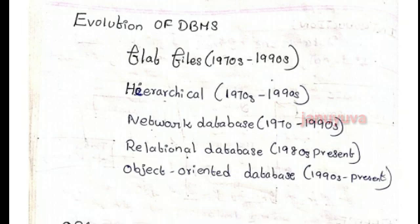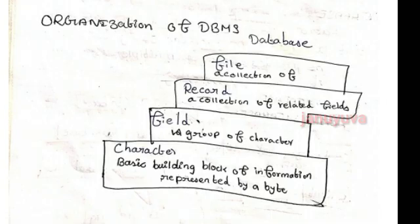The organization of DBMS: first is the file, then record, next field, then character. A file is made of records. A record is field-related. A field is a group of characters. The character is the building block, and information is represented by a byte.